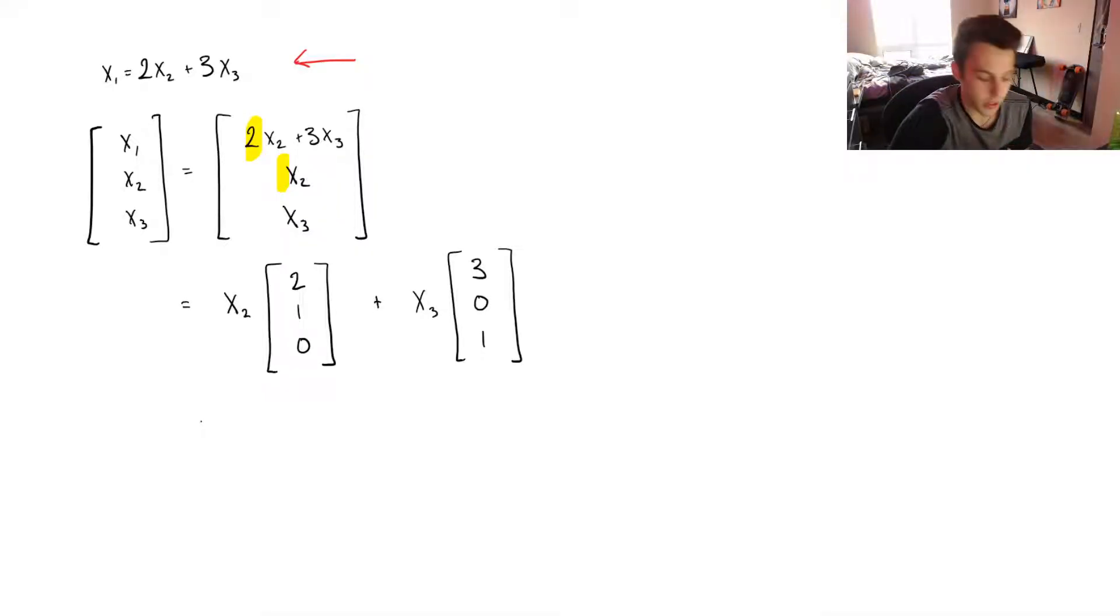when I only have two vectors, I know that they're linearly independent if they're not scalar multiples of each other, right? And it's very clear here that they're not scalar multiples. I've got this 0 here and a 0 here, right? And this 2 and the 3, like, they're very clearly not scalar multiples.